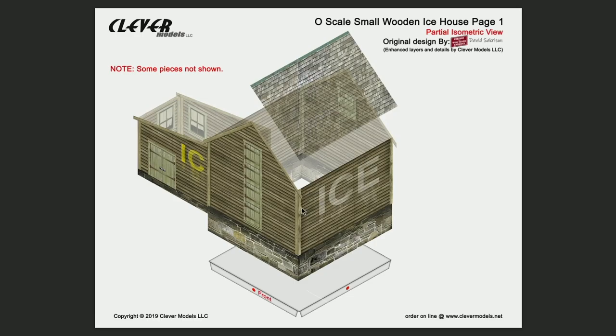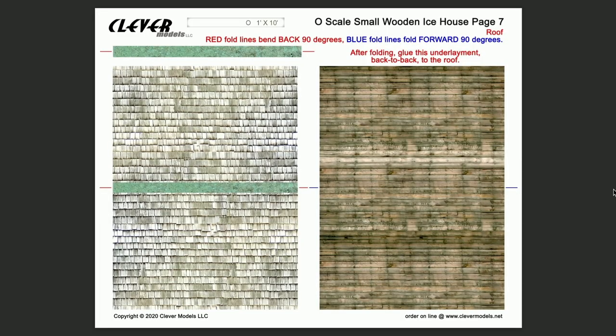First, let's take a look at the isometric. As you can see, here's our ice house and here is the shingles, which I call cedar shake, that we're going to be working with. In this segment, we'll be dealing with page 7, which has the shingles and the roof ridge, as well as the underlayment.